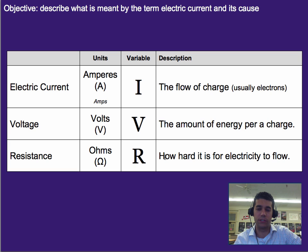And then there's how hard is it for electricity to flow, and that is called resistance. It's variable R, and it's measured in ohms with the upside-down horseshoe, which is the omega symbol.